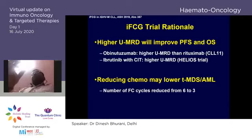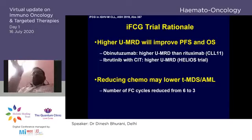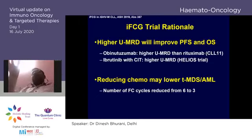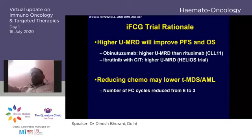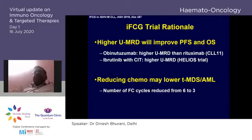Why not combine targeted therapy with chemotherapy to achieve a flat survival curve — at least for the good-risk group? With a time-limited approach and fewer side effects, we might achieve a cure rate with 13–14 years of flat survival. Can we achieve that?